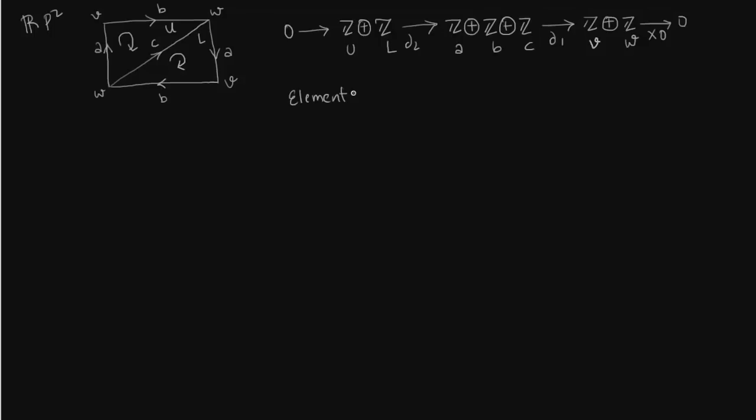In order to compute we first have to start with elements of C2. They are of the form PU plus QL. Delta 2 acting on PU and QL is a linear map, so P and Q which are integers factor out. Now we have to determine what is delta 2U and delta 2L.